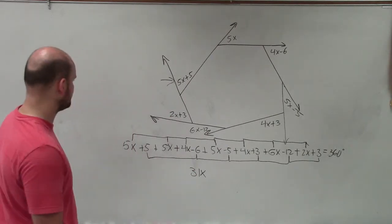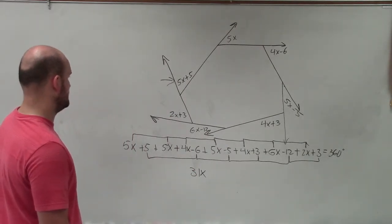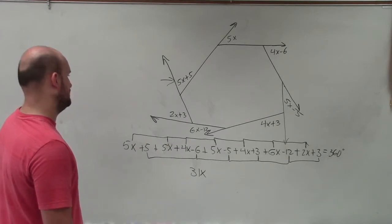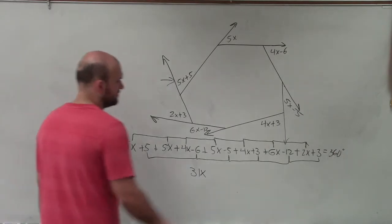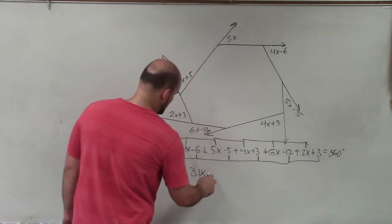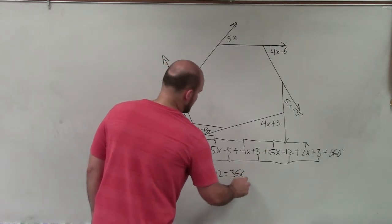5, 6, negative 6, negative 3, negative 15. OK. Negative 15 and then that would be negative 12. So I have 31x minus 12 equals 360 degrees.